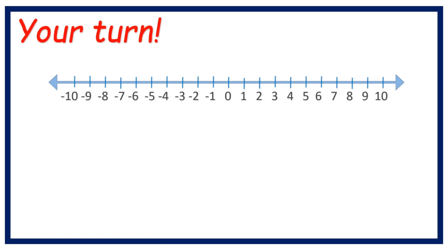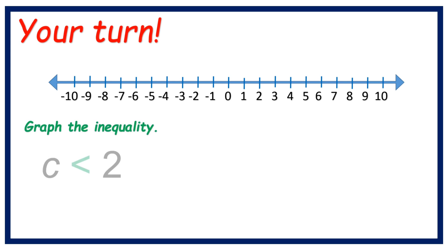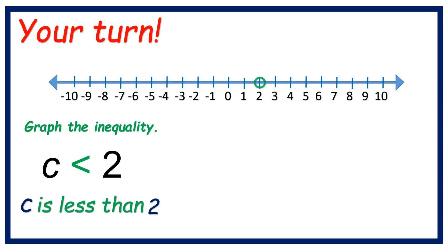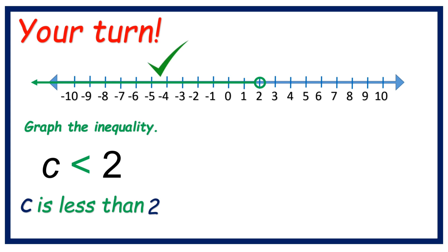Your turn. Graph the inequality: C is less than 2. Timer starts now. Let's check your answer. Look for number 2 and put an open circle, then draw an arrow going left. That's it, you got it.